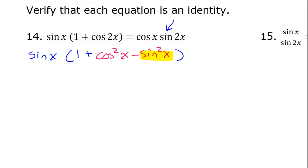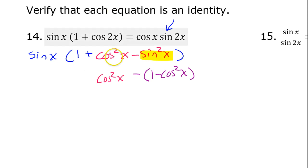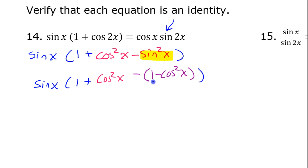I'm replacing sine squared with 1 minus cosine squared. I'm going to really need to put this in parentheses because of the negative sign in front. So I'm going to have the negative sign and then parentheses around 1 minus cosine squared. I still have cosine squared x, 1 plus all of this, and sine x out front. Now I'll go ahead and distribute this minus sign, giving me negative 1 plus cosine squared x.